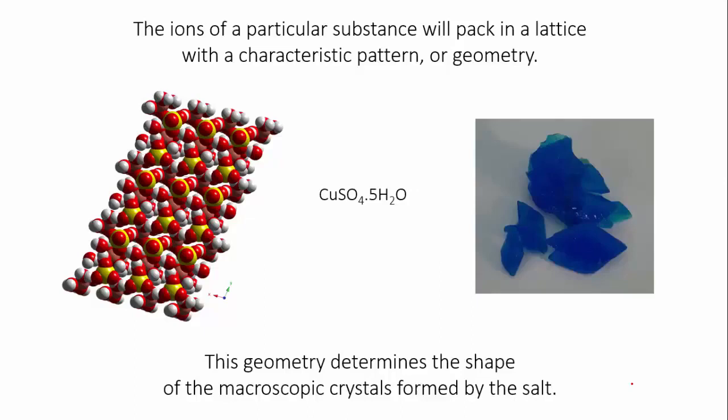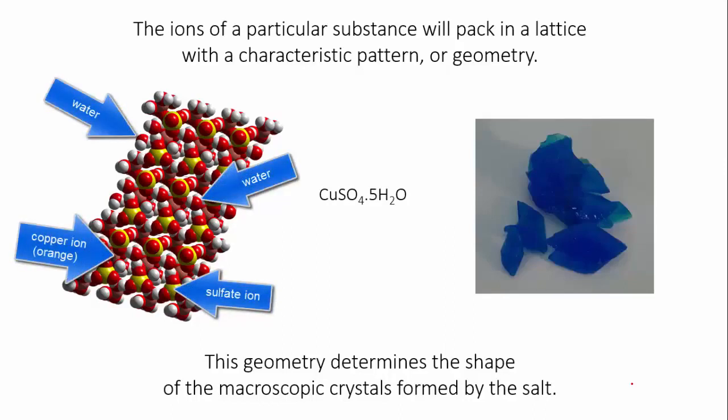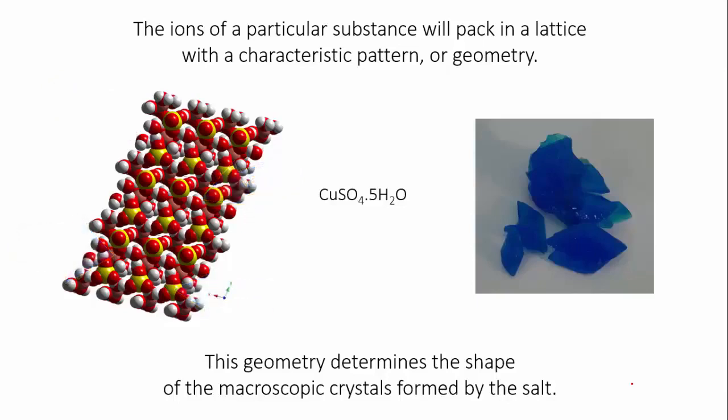Note that this is copper sulfate pentahydrate, which is the familiar blue form of the salt. This crystal actually includes water molecules among the ions. You can see in the formula that five water molecules are added. While the copper and sulfate ions are still locked in place by ionic bonds, the water molecules are held there by weaker intermolecular forces that you'll meet later.